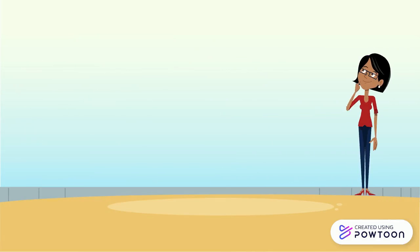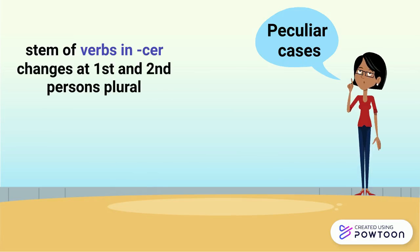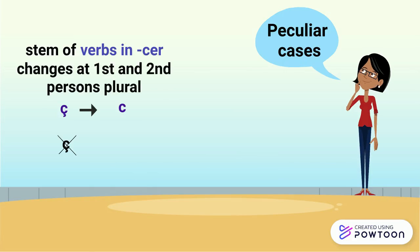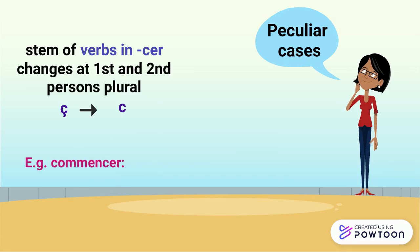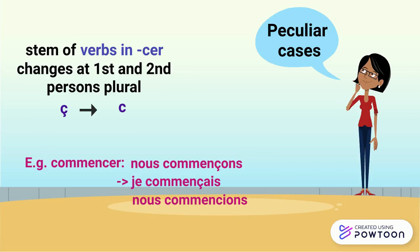However, there are a few cases that are peculiar. The stem of verbs in -CER changes at the first and second person plural. The C with a cédille becomes just C because we don't need a cédille to make the S sound — the I is enough. For instance, commencer: nous commençons → je commençais, but nous commencions, vous commenciez without a cédille.